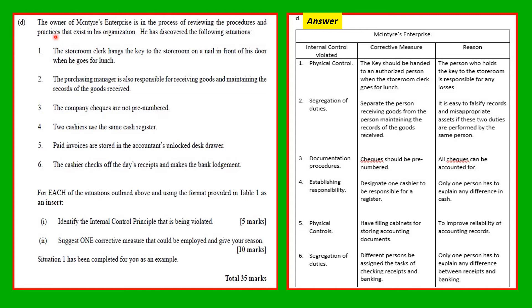The owner of McIntyre Enterprises is reviewing procedures and practices and has discovered several situations. For each situation, using the provided table, identify the internal control that has been violated and suggest one corrective measure with a reason. Situation one has been completed as an example: the store clerk hangs the key to the storeroom on a nail in front of his door when he goes for lunch.